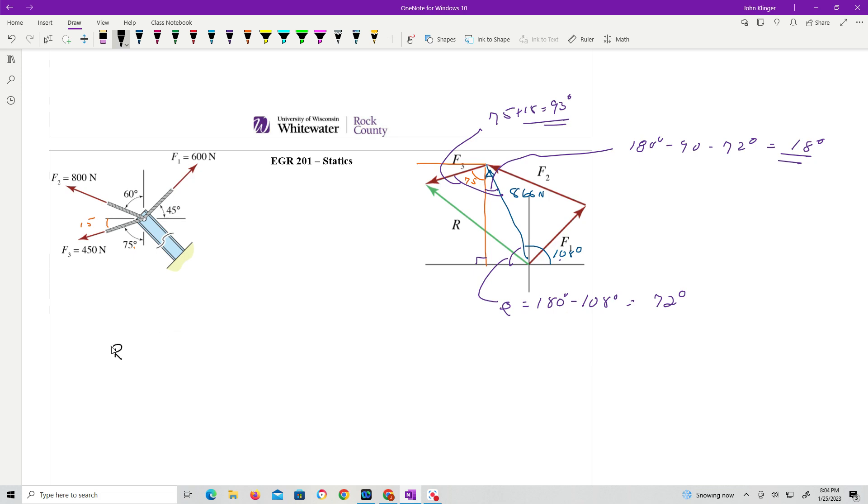All right. So now we should be able to find the magnitude of r. Because we have the two sides and the included angle. So we have 866 Newton squared plus f3 is 450 squared minus 2 times the included angle of 93 degrees square root. Our magnitude is 998 newtons.